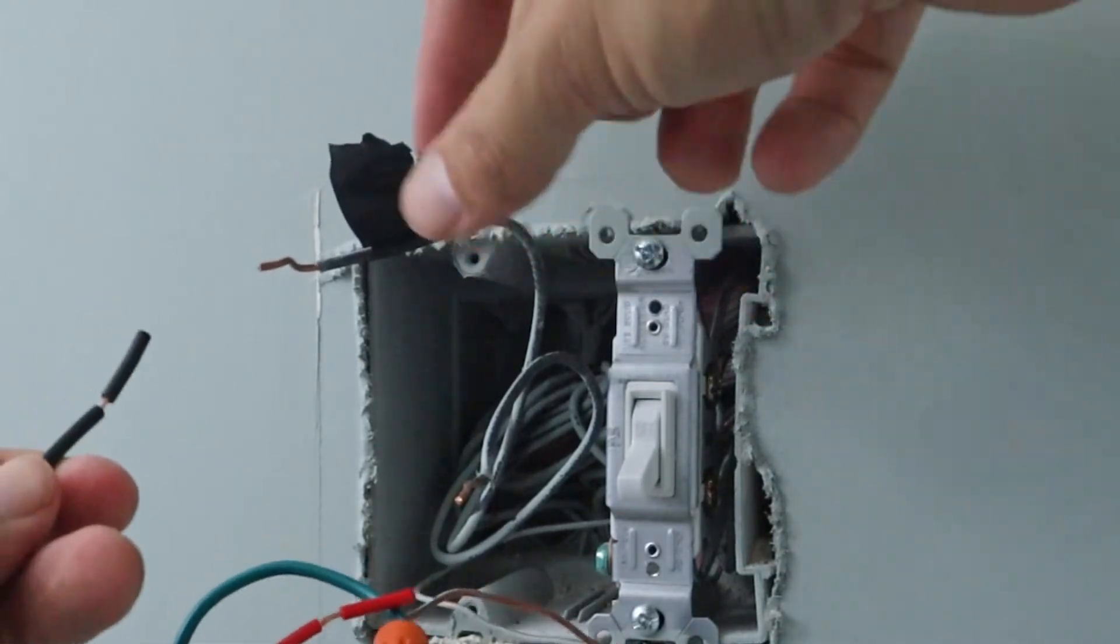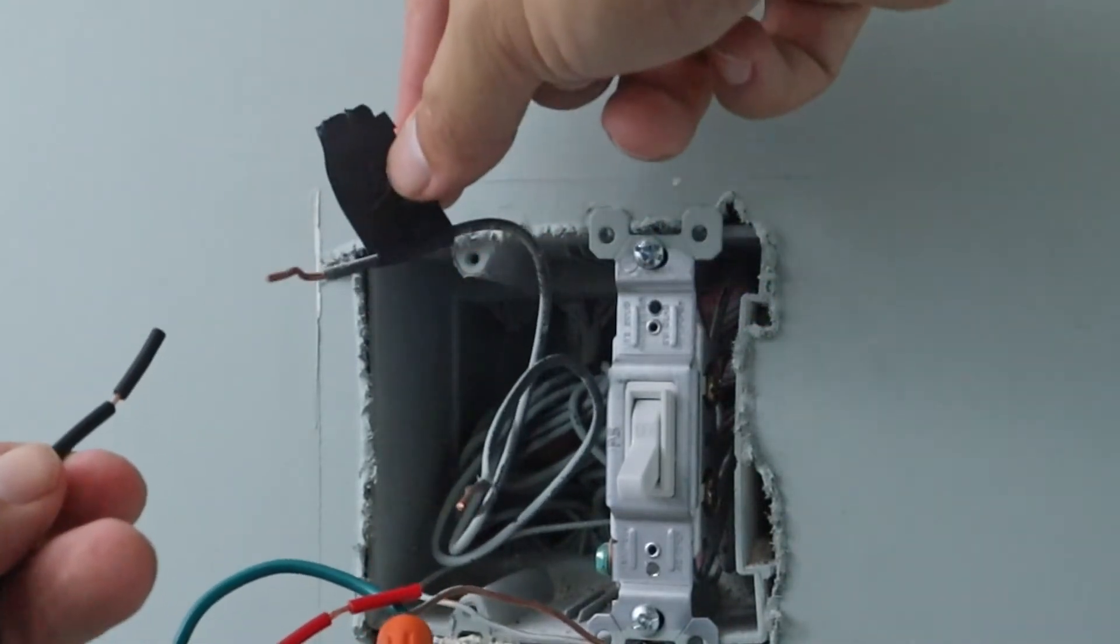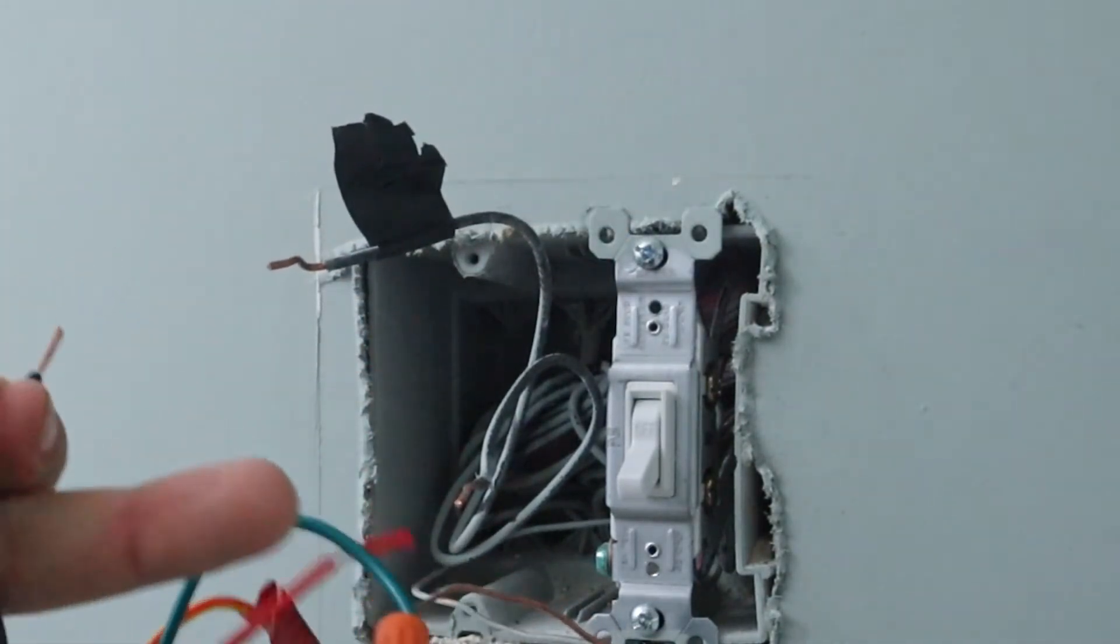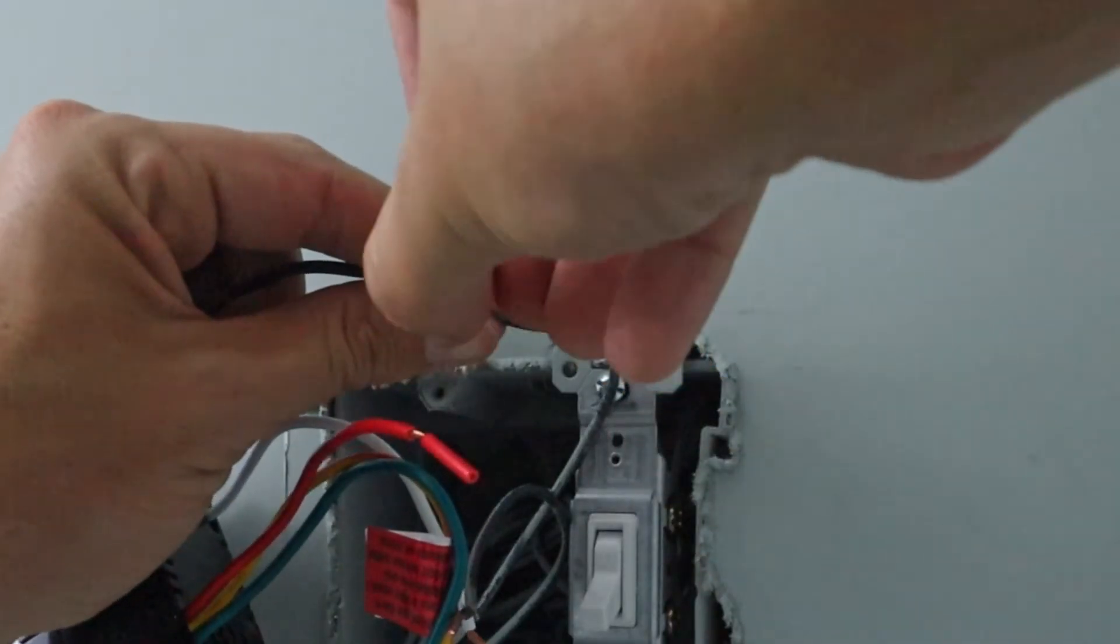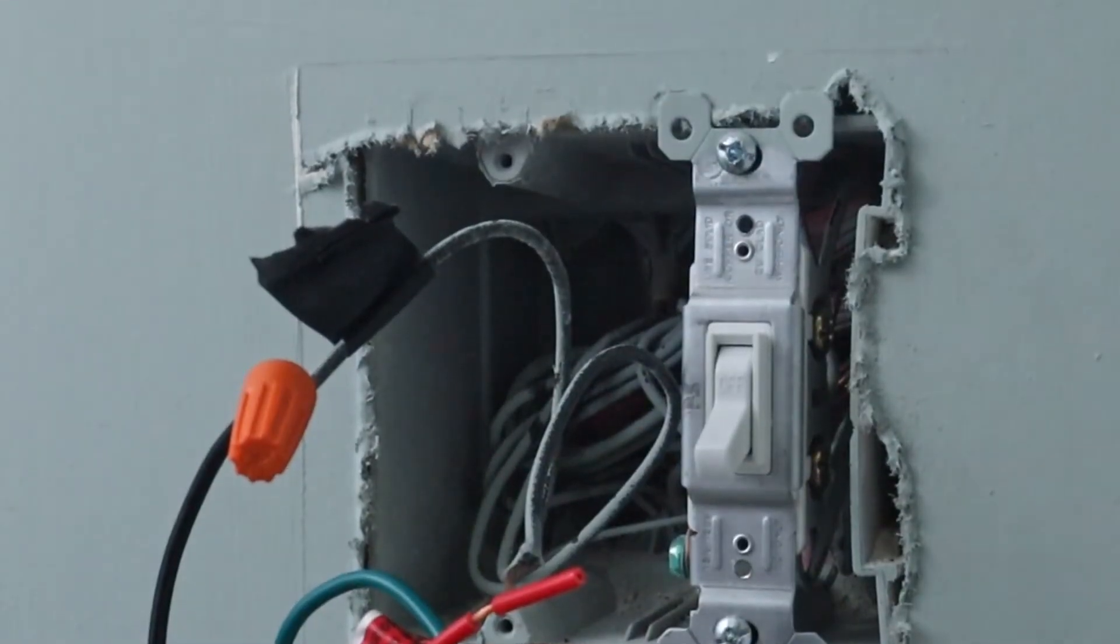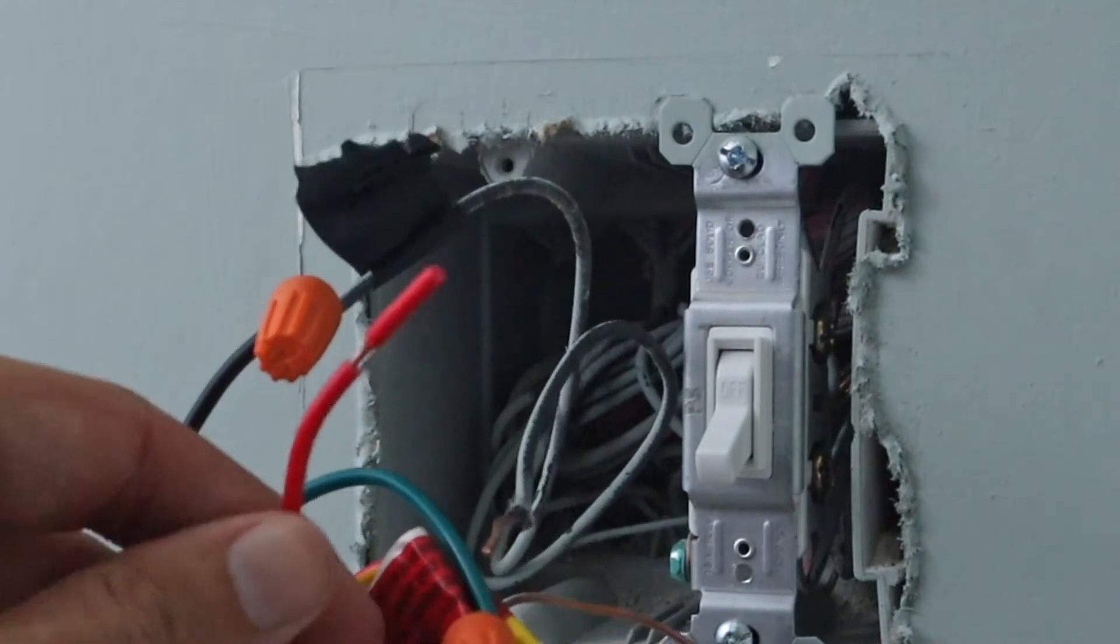All right, so next let's go ahead and work on our line wire, which if you remember we marked with our electrical tape. We'll go ahead and remove the insulation from that and put our wire nut on there.